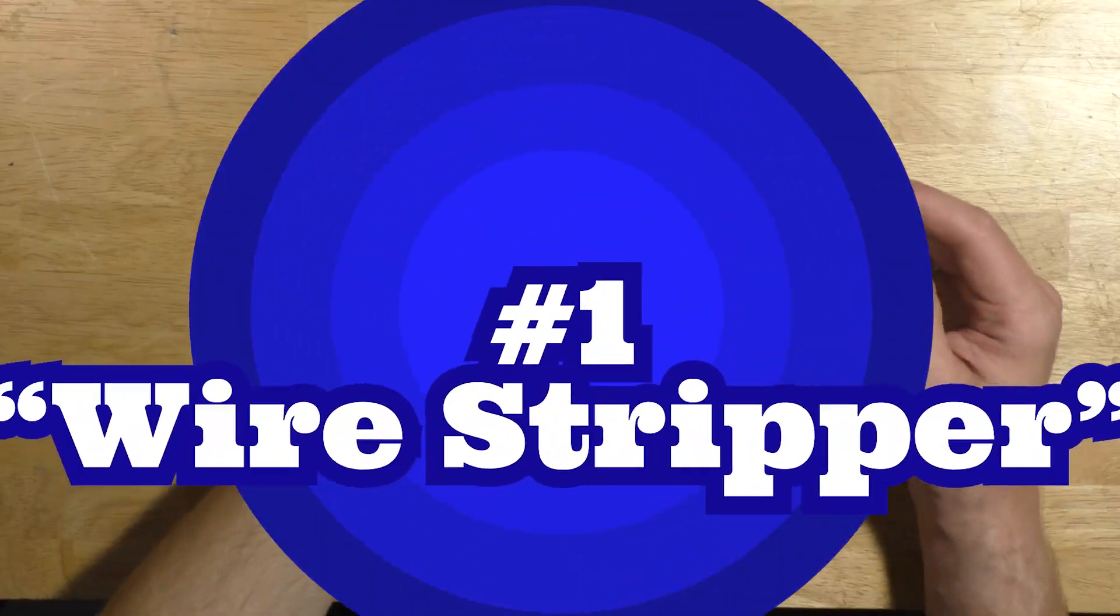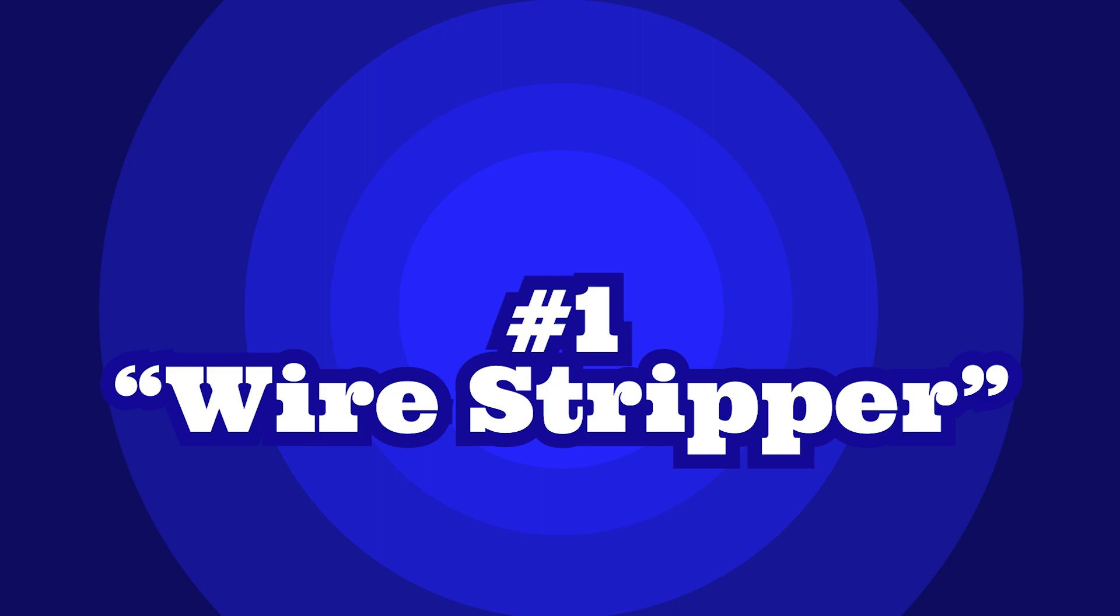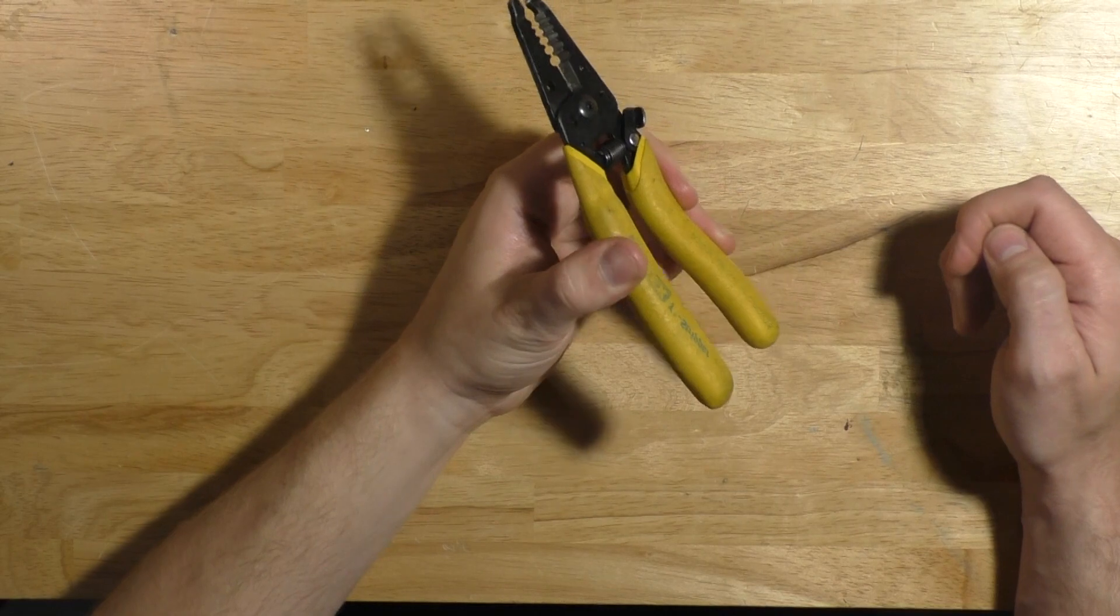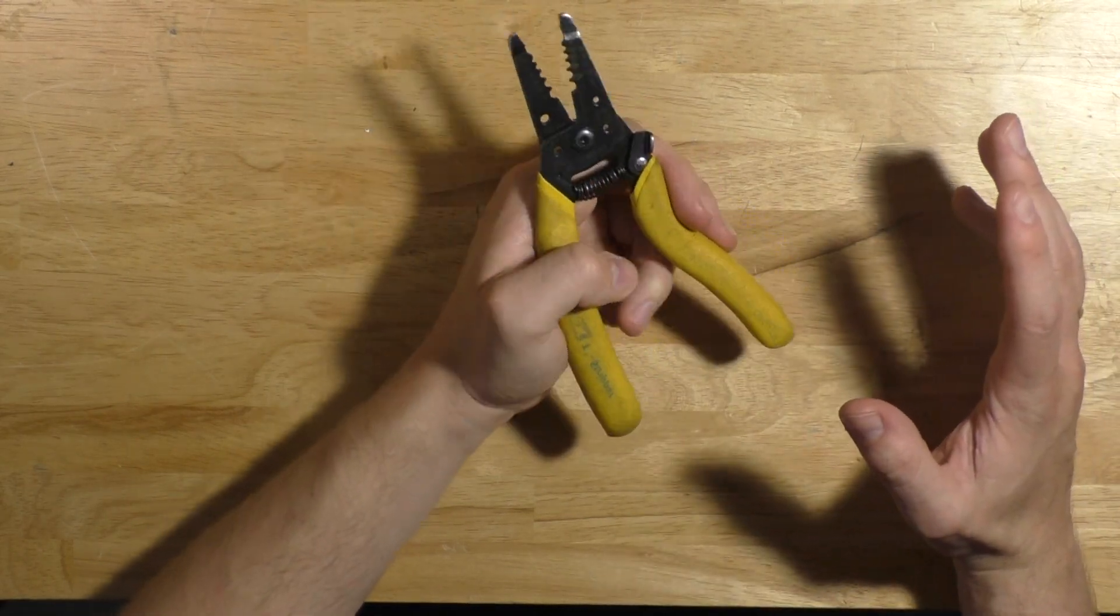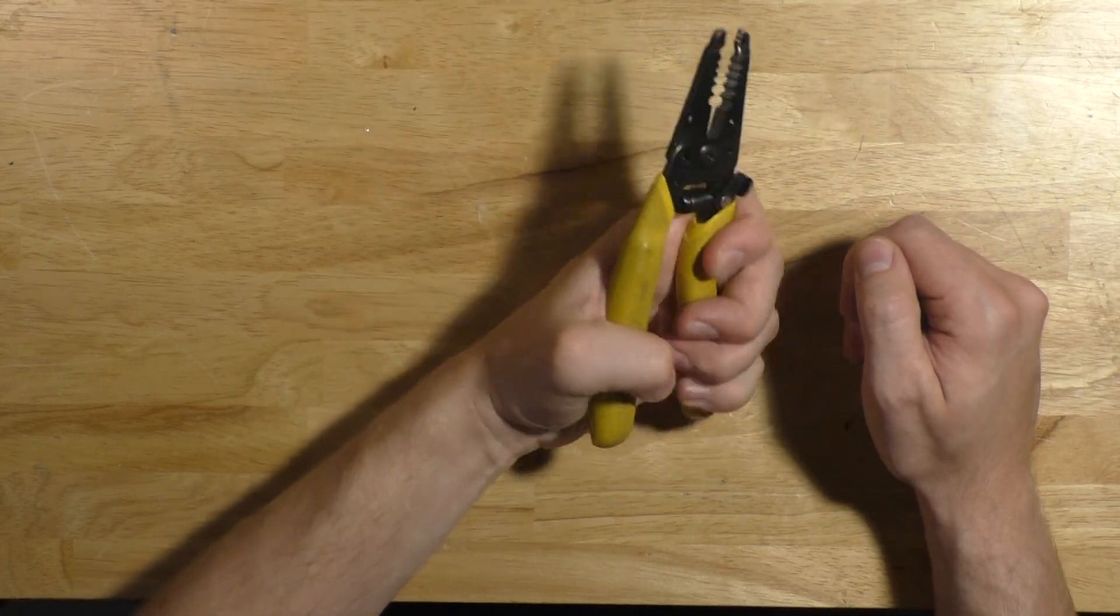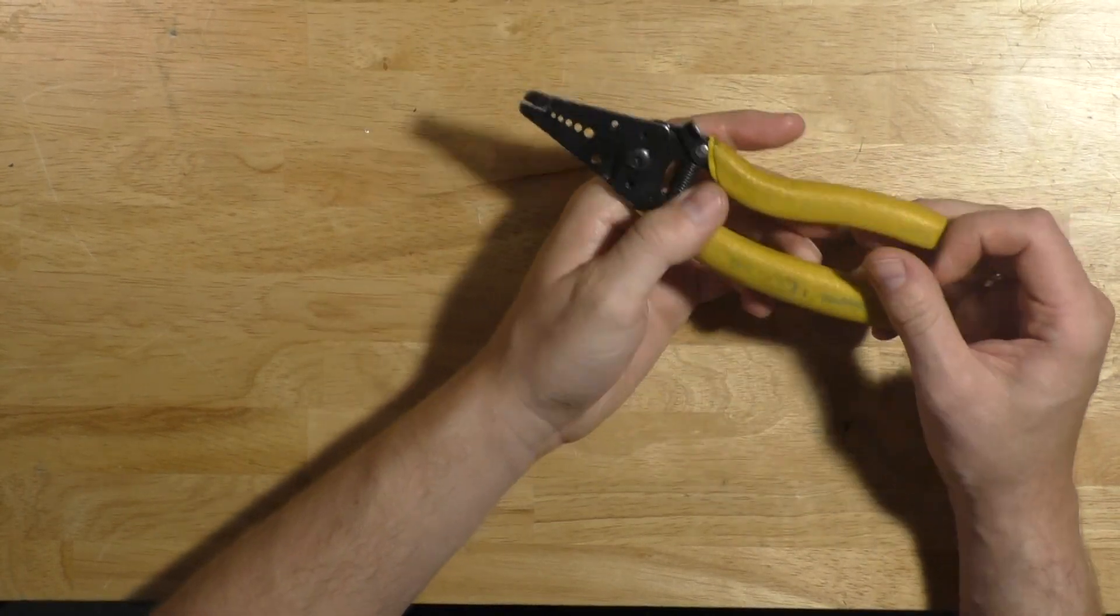All right, let's get to the first tool. First on the list is a wire stripper. If you're going to be doing any kind of work as an electrician, it isn't unreasonable to suspect that there may be wires involved. In order to properly terminate wire you need to be able to remove the insulation on your conductors which can be achieved using a wire stripper.